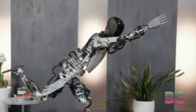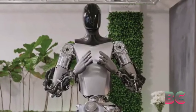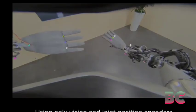A video showcasing Tesla's humanoid robot, Optimus, has left viewers astonished by its remarkable balance and coordination during a yoga session.